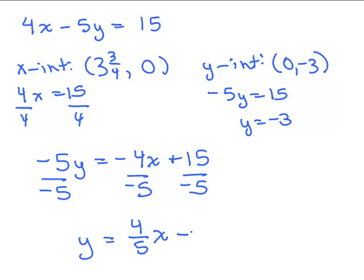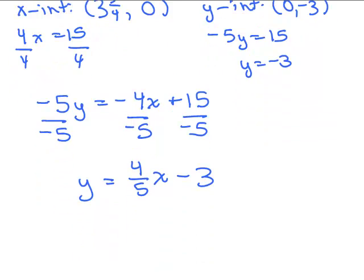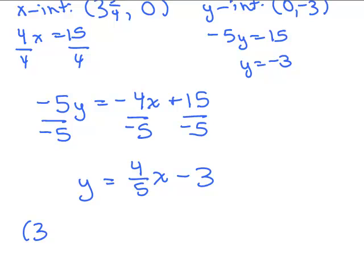So I get the slope of 4 fifths here. When I write it in slope intercept form, y equals 4 fifths x minus 3. It's a little bit easier to plot the points, and you can get them without putting any fractions on your graphs. Let's see, let's do it both ways. We've got, let me write these different points out. We've got 3 and 3 fourths 0, and 0, negative 3 using the slope intercept method, and if I did it in slope intercept form, I had y equals 4 fifths x minus 3.